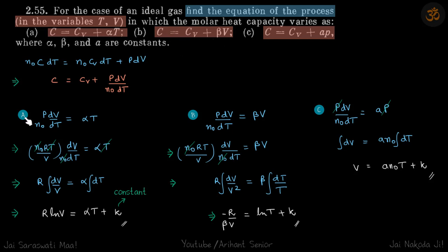For the first part, p dv by n0 dt is alpha t. For second part, p0 dv by n0 dt is this, and for third part this. After that I think you can resolve.